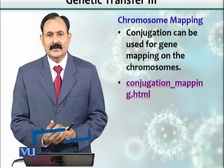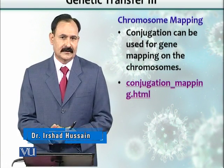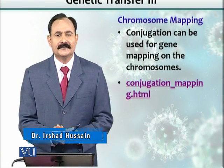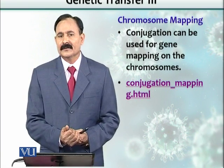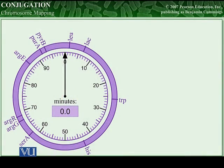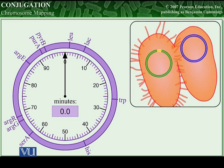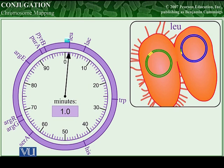Conjugation through the high-frequency recombination cell and other conjugations via the fertility factor can also be used for gene mapping. The circular genome of E. coli can be mapped by allowing HFR conjugation to occur for set amounts of time. It takes about 100 minutes to transfer a complete E. coli chromosome. Genes close to the fertility factor will transfer quickly — the leucine gene transfers even when conjugation lasts only two minutes, telling us it is very close to the fertility factor.